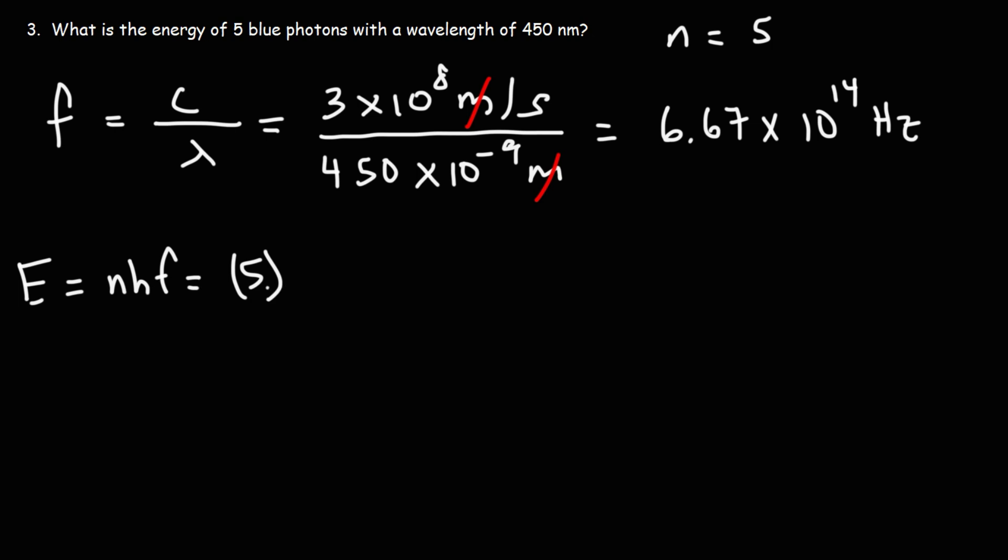N is 5, since we're dealing with 5 photons, 5 blue photons. H is always going to be the same. Planck's constant. That's not going to change. So that's just a number you're going to have to commit to memory.